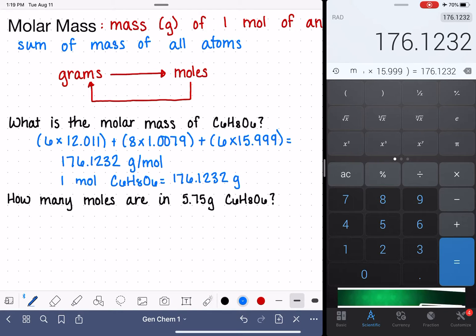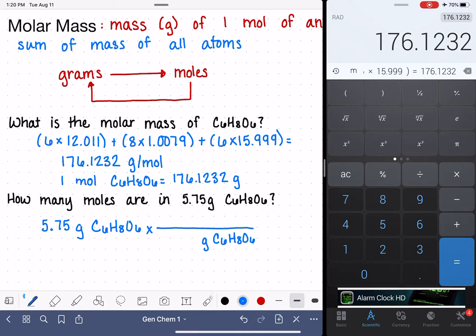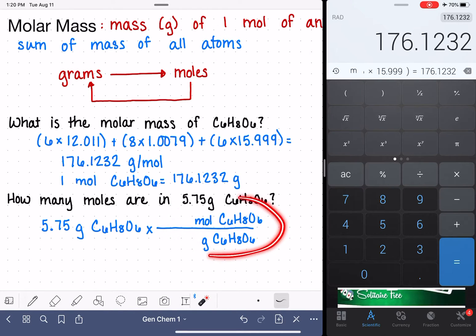The strategy is to start by writing the number and unit provided in the problem: 5.75 grams of C6H8O6. Then we multiply by a conversion factor to cancel out units of grams C6H8O6 and convert into moles of C6H8O6. The problem is asking us how many moles.